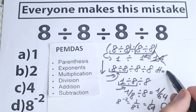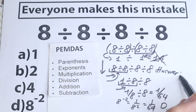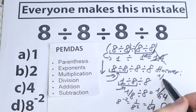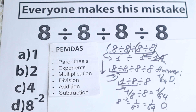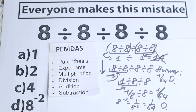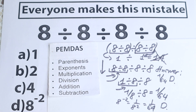The correct solution is option D — 1 over 64. This is my solution to this problem. If you made this error, I'm happy you made it, because you won't make it again. If your answer matches mine, I really appreciate it. Definitely don't feel bad if you got this wrong. If you want to learn basic math and interesting brain tests, subscribe to my channel, and if you'd like to support me, please leave a like. Thank you for your time, have a great day!